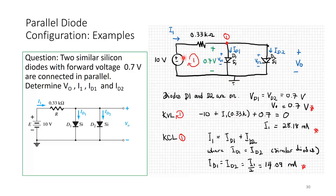Redrawing the circuit: D1 and D2 are both on since 10 volts is sufficient and they are forward biased. VD1 and VD2 are both 0.7 volts. Vout is the voltage across the diodes, so Vout equals 0.7 volts — they are consistent because both parallel diodes are at 0.7 V.